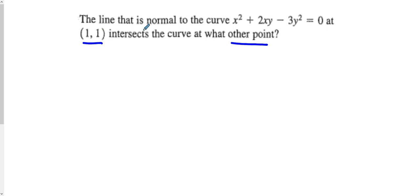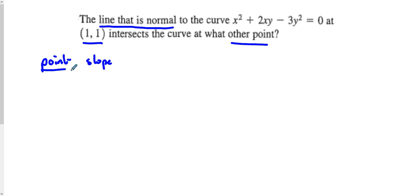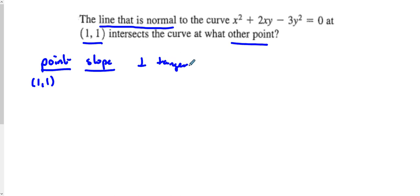The first is: what is the line that is normal to this curve? To figure out the line that's normal, we need to figure out a point and the slope of this line. The point we know is (1, 1). The slope, because it's a normal line, we need to find the opposite reciprocal of the derivative, because the normal is perpendicular to a tangent.